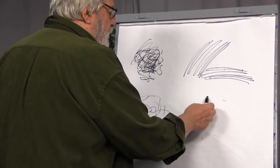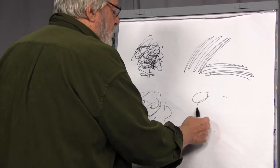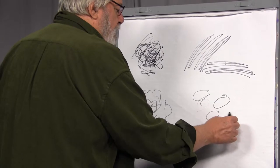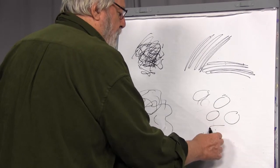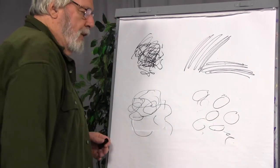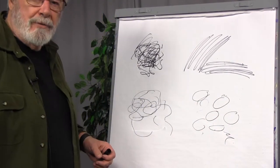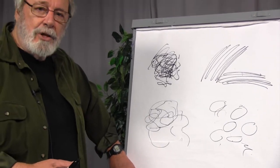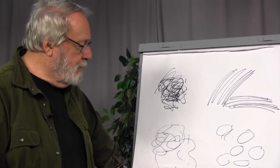And then they'll move into this sort of repetitive shape type of thing. And this is like the four stages of scribbling. This is how art actually begins.